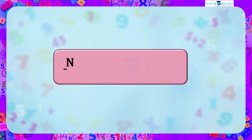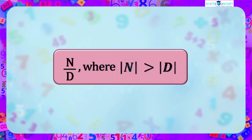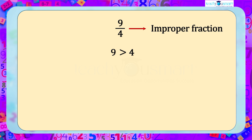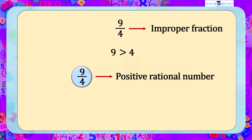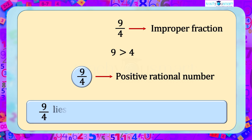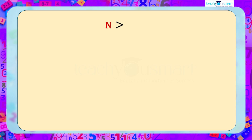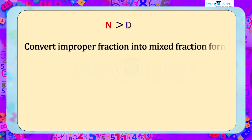Now we will try to plot rational numbers whose modulus of the numerator is greater than that of the denominator. Let us plot 9/4 on a number line. Here we can see the numerator 9 is greater than the denominator 4. Such fractions are improper fractions. First, 9/4 is a positive rational number, hence it lies to the right of 0 on the number line. The next step is to convert the improper fraction into mixed fraction form.